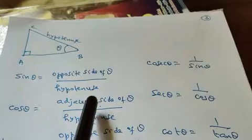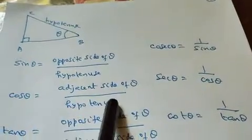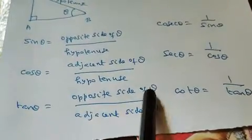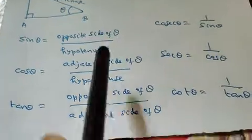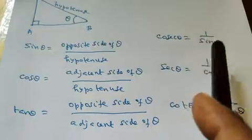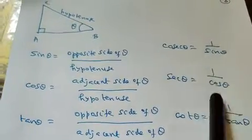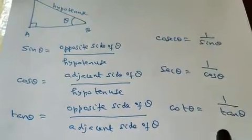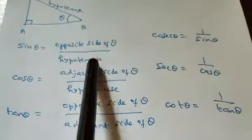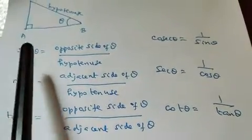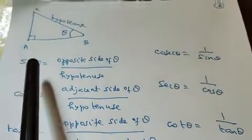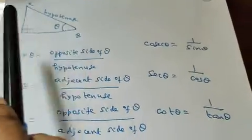What is cos theta? Cos theta is the adjacent side divided by the hypotenuse. What is tan theta? Tan theta is the opposite side divided by the adjacent side. Sin theta is opposite over hypotenuse.